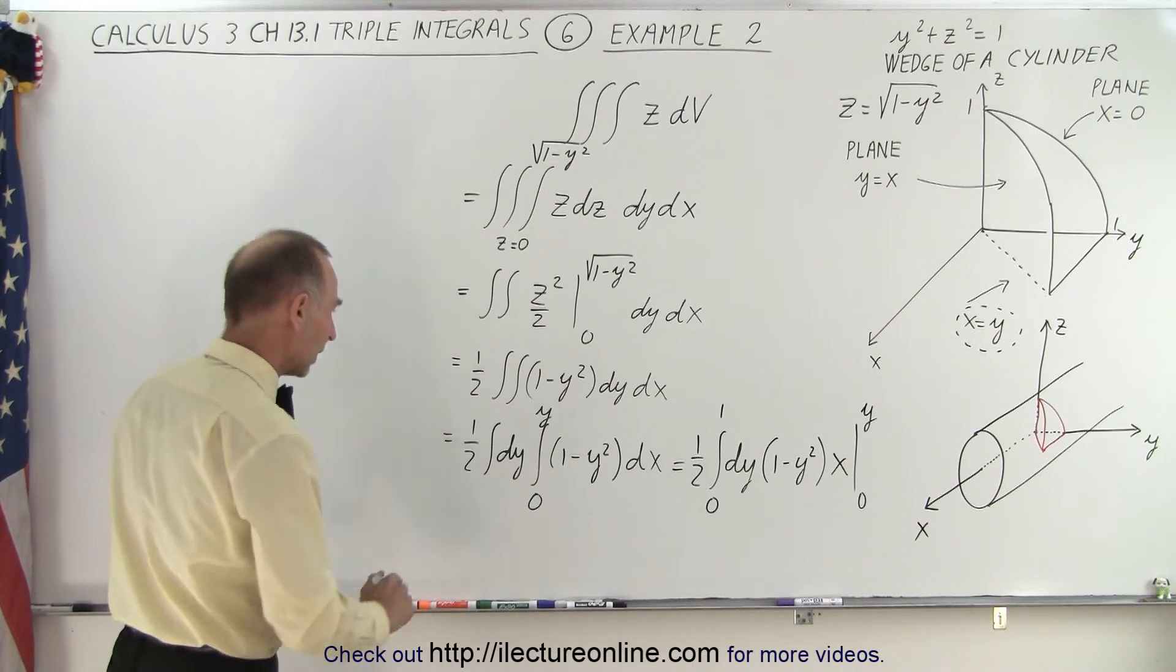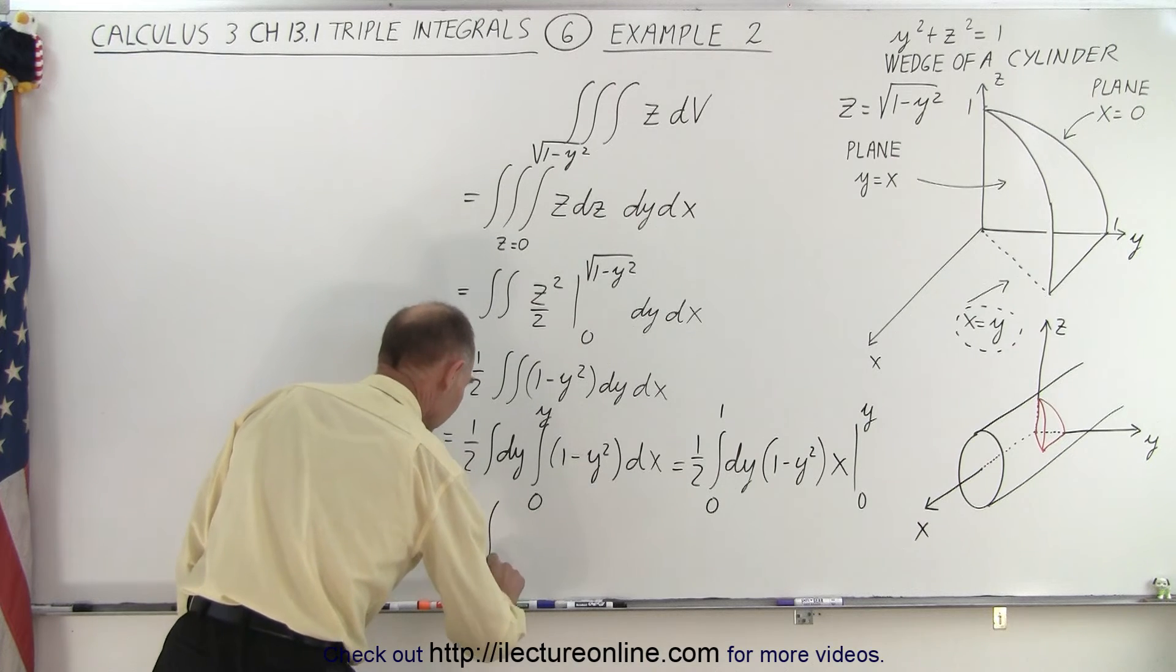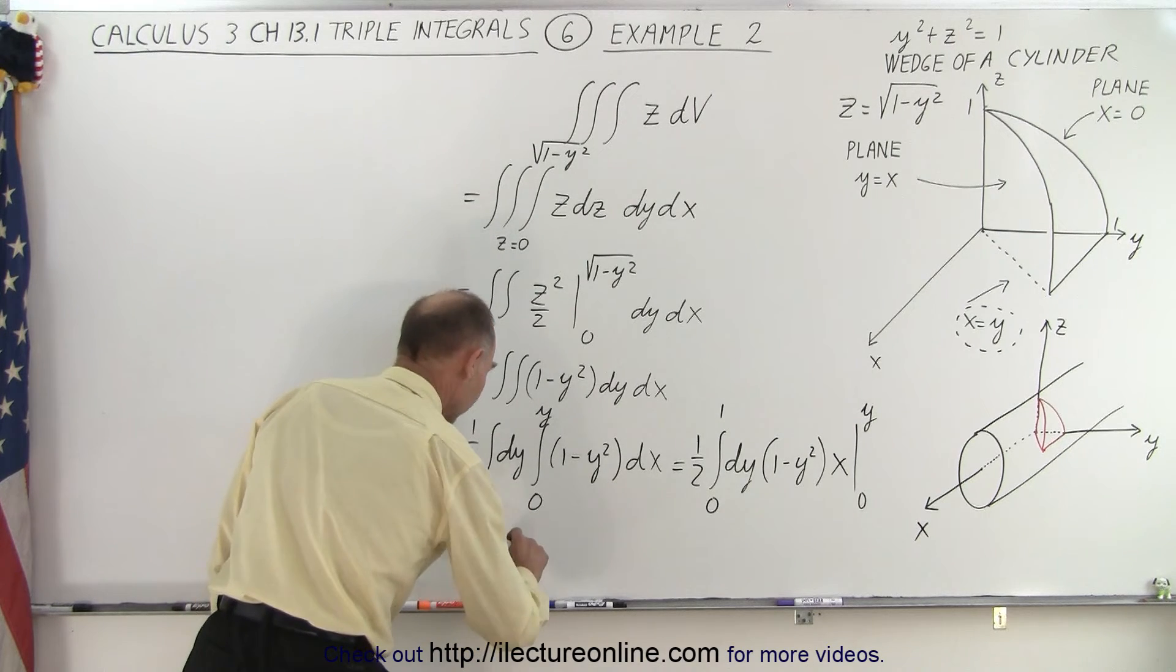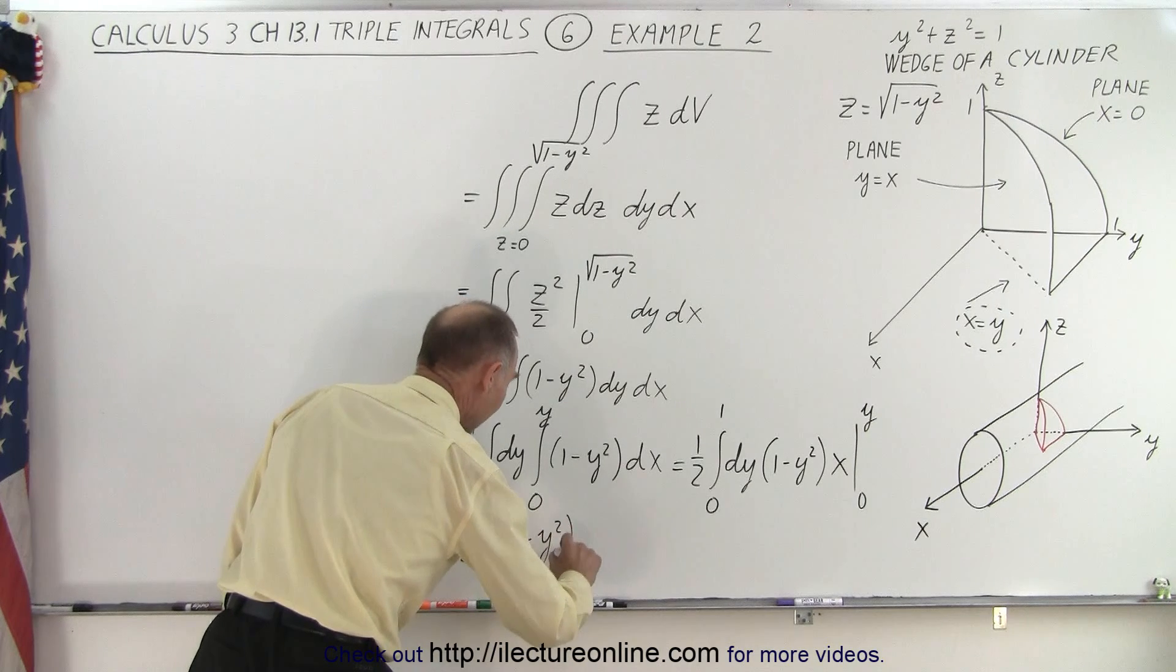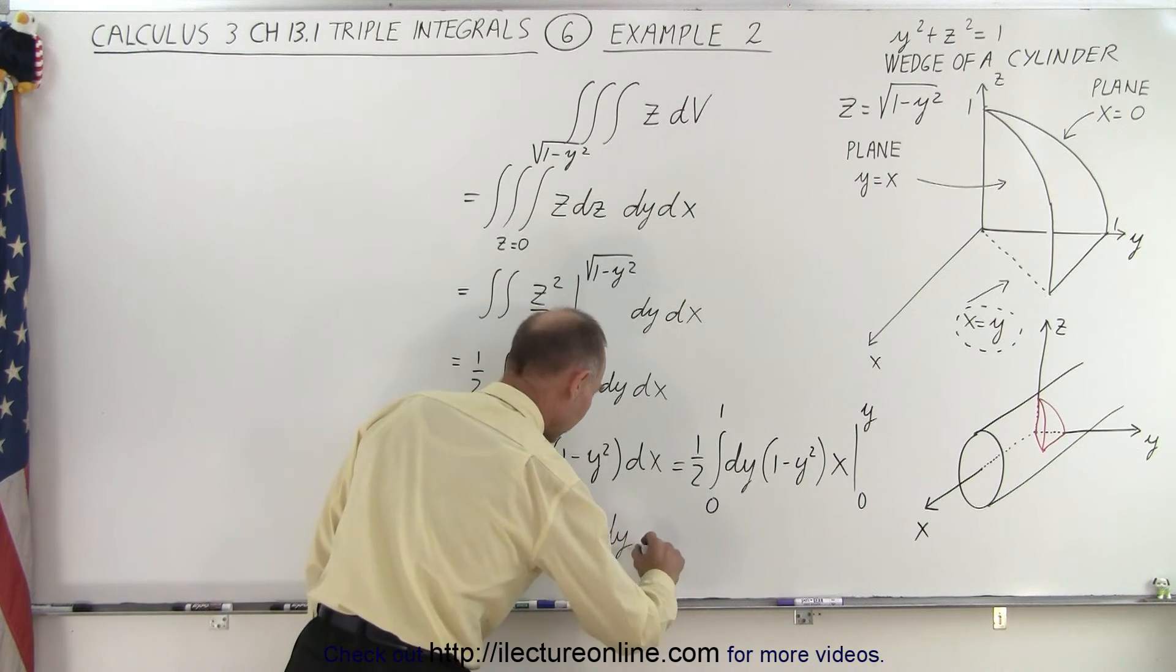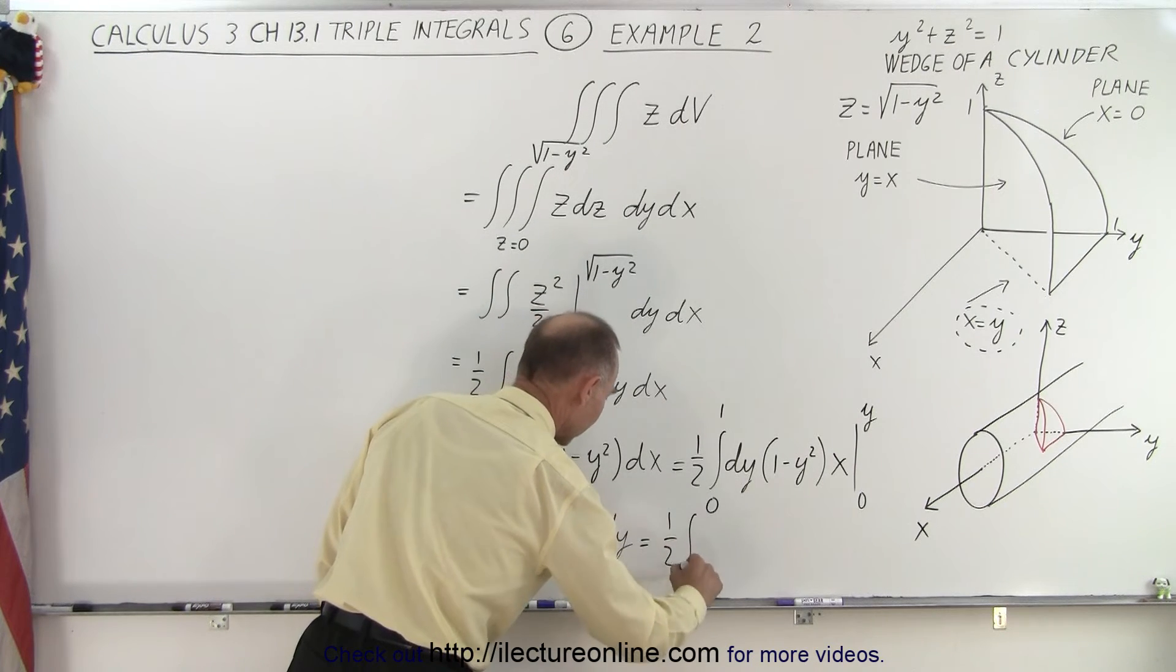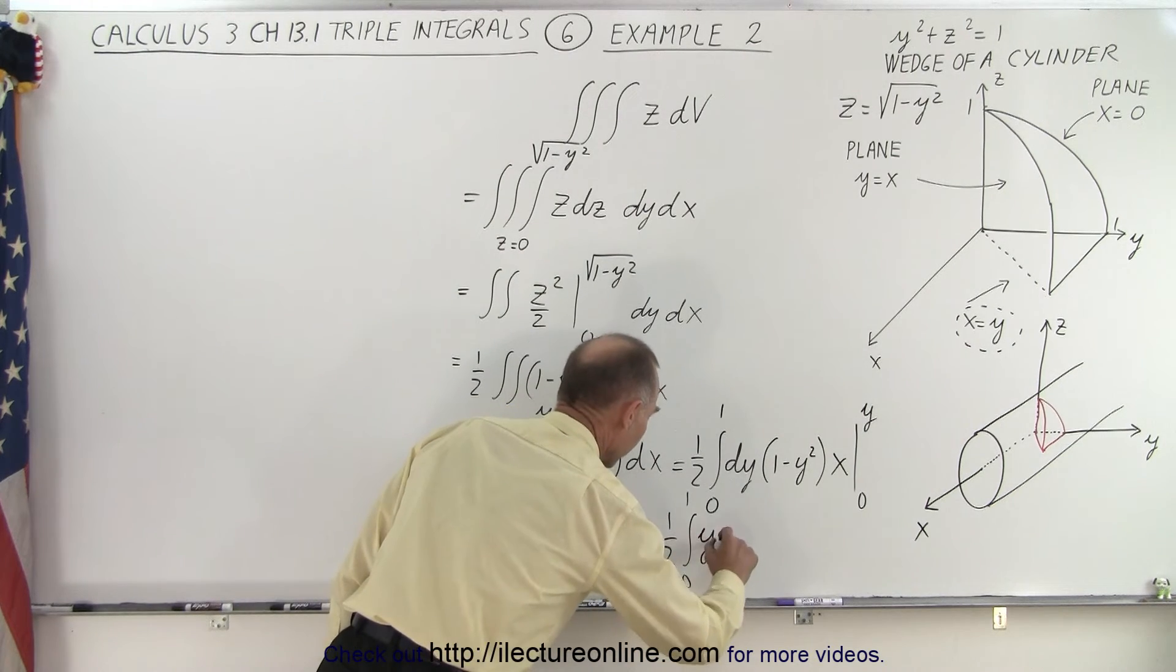All right, so that becomes one half times the integral from zero to one of one minus y squared times y dy. And now notice when we multiply this out, so this becomes one half times the integral from zero to one of y minus y cubed dy.